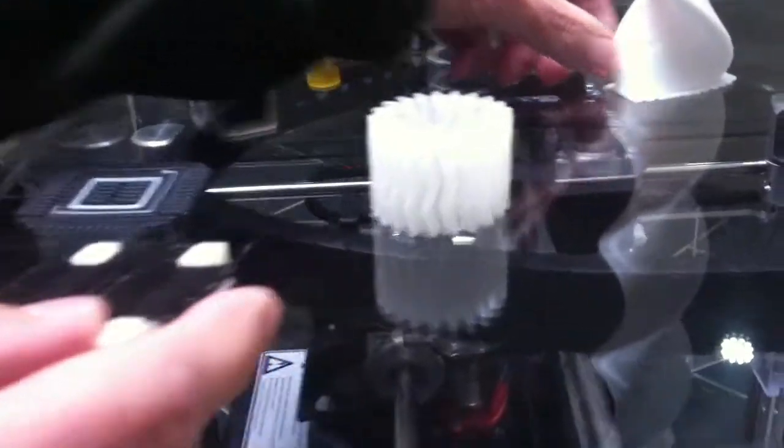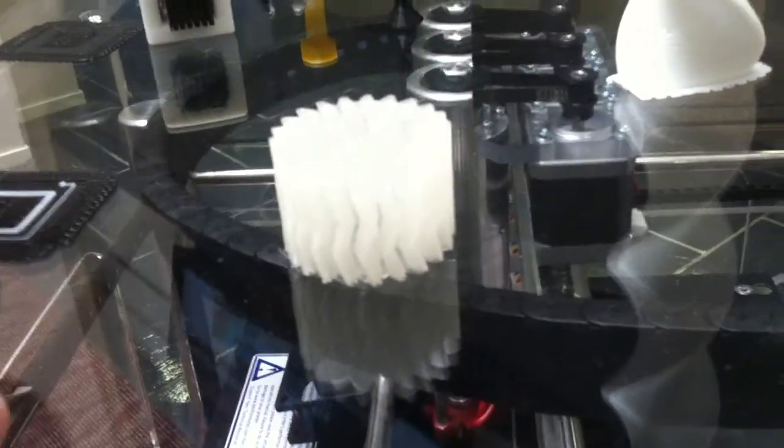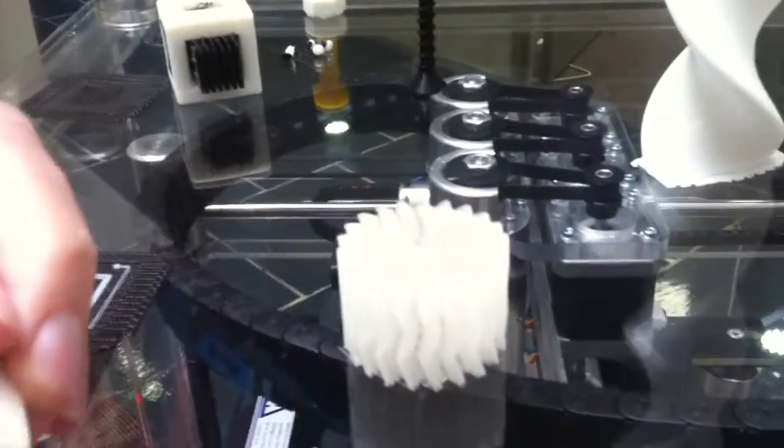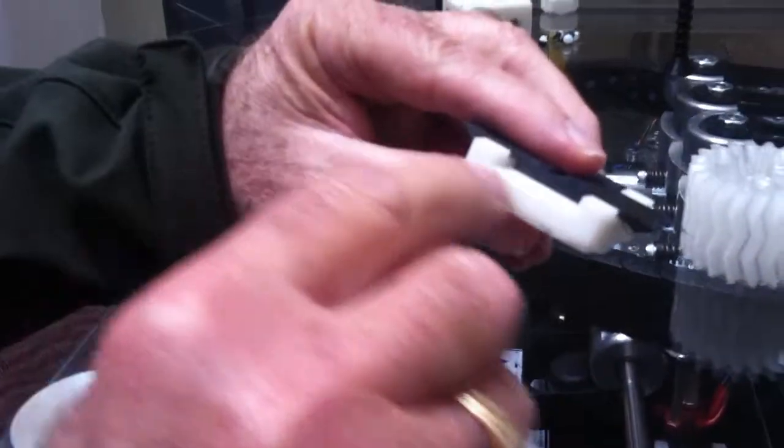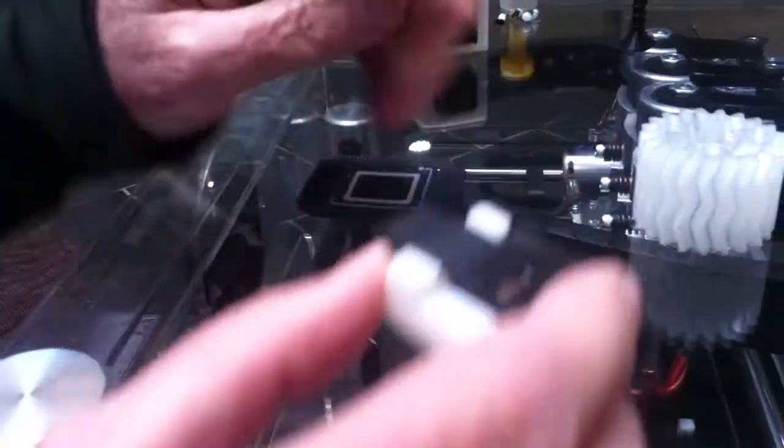And since there are three heads on this piece of equipment, we can use three different colors or three different types of plastic. So it'll go through one at a time, laying down the plastic. As you can see right now, it's laying down black.